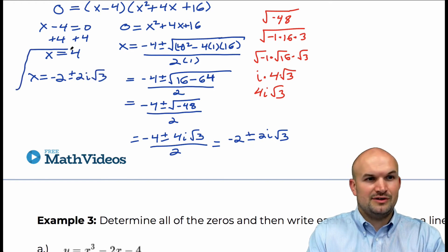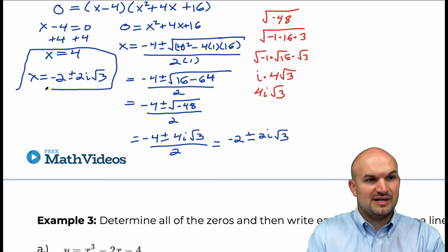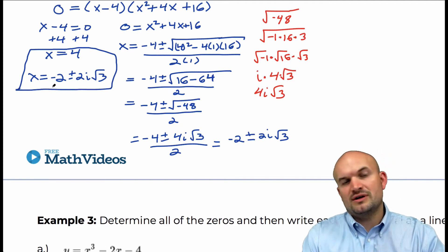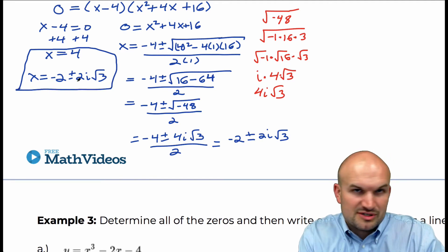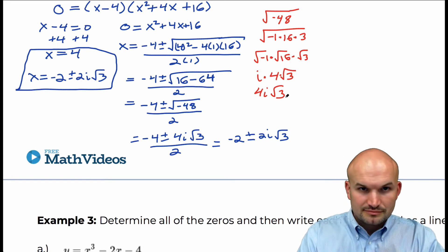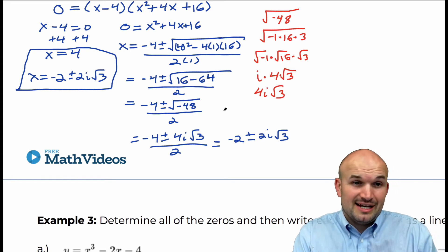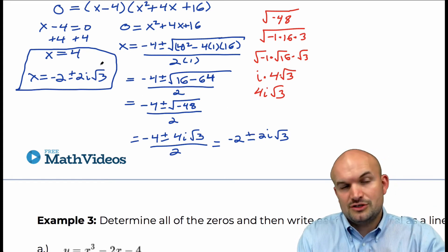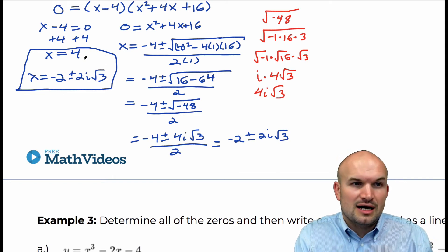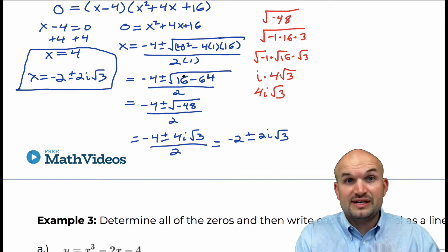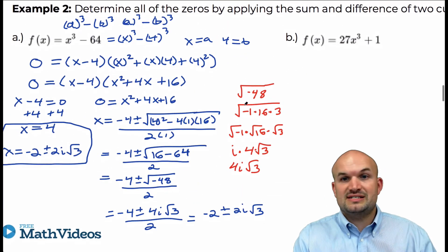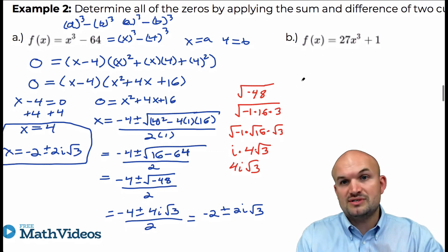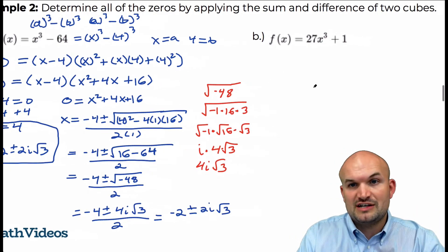Notice we have those two complex zeros, and those two complex zeros give us our three total zeros, which satisfies the fundamental theorem of algebra. So that's really important — using the fundamental theorem of algebra there.